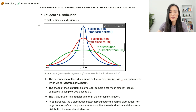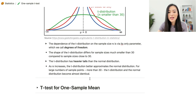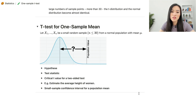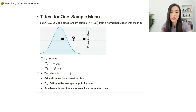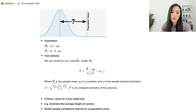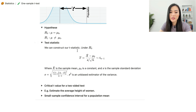Now let's look at the t-test for one-sample mean. We use it when we want to estimate the population mean from a small random sample with fewer than 30 data points. The null hypothesis is that mu, the population mean, equals mu-zero, and the alternative hypothesis is that mu is not equal to mu-zero.